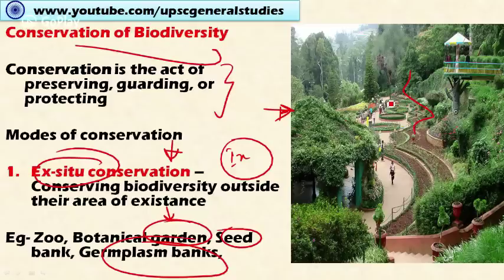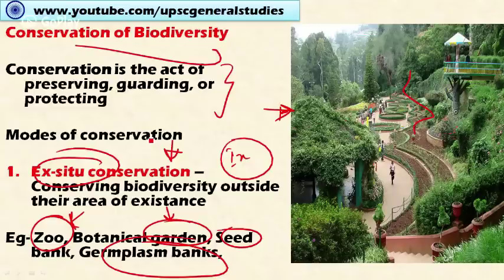Similarly, in animals, we also do ex-situ conservation in the form of zoological gardens. Here different species of animals are held captively for public purposes, for entertainment, and also for the conservation of these animal species in a different setting outside the natural habitat. This is the example of a zoological garden.